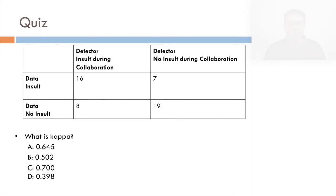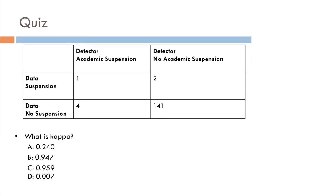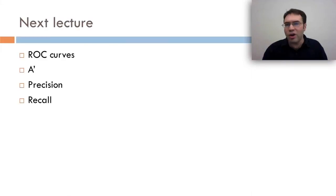So now we have a quiz. Here's another quiz. So I hope you found this lecture on kappa and accuracy interesting. They're both measures you'll see sometimes. Kappa increasingly compared to accuracy because it is a better measure. In the next lecture, we're going to continue with classifier metrics of goodness, including ROC curves, A prime, precision, and recall.